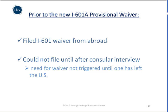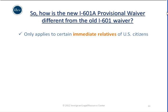Previously, once a person left the United States to go through consular processing, they would need to file a waiver from abroad, and they could not file it until after the consular interview. That was because the need for the waiver is not triggered until one has left the United States. This new waiver has now changed that process. Let's look at how the new I-601A provisional waiver is different from the existing I-601 waiver process.